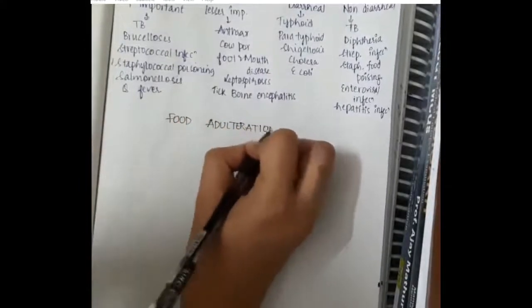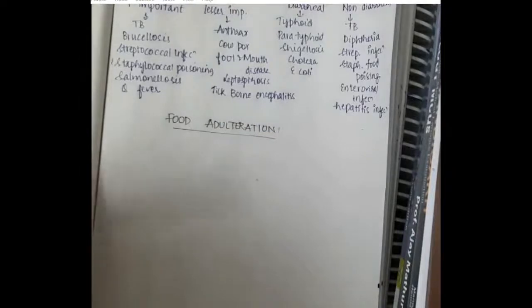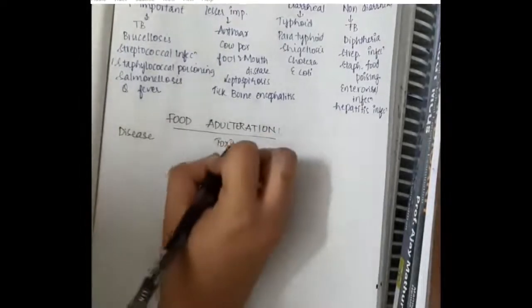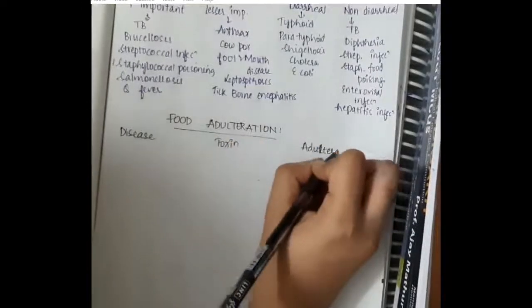These questions have been asked many times. If you see in food adulteration, there are diseases, toxins, and adulterants.